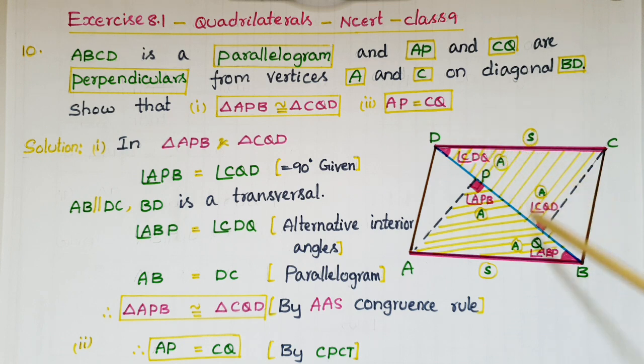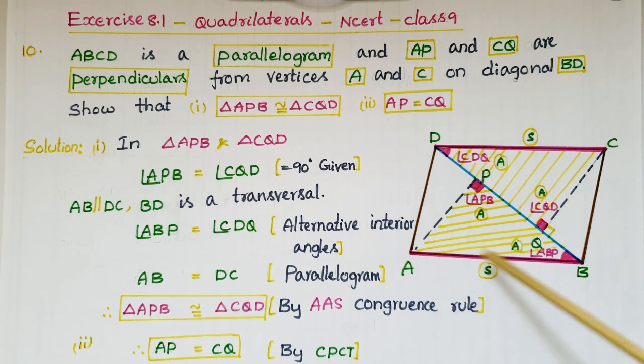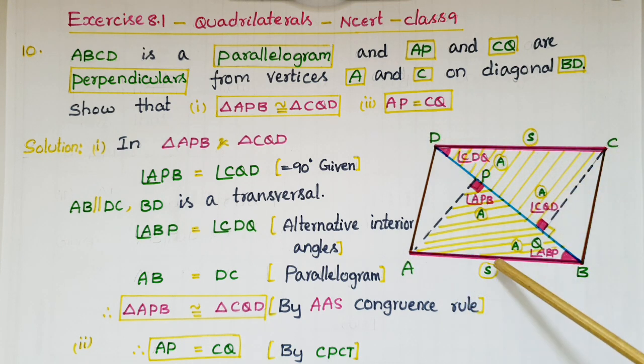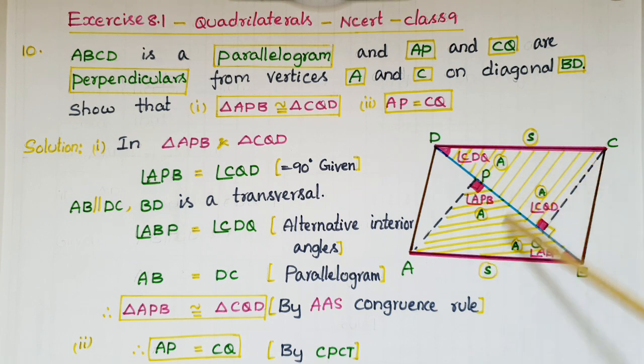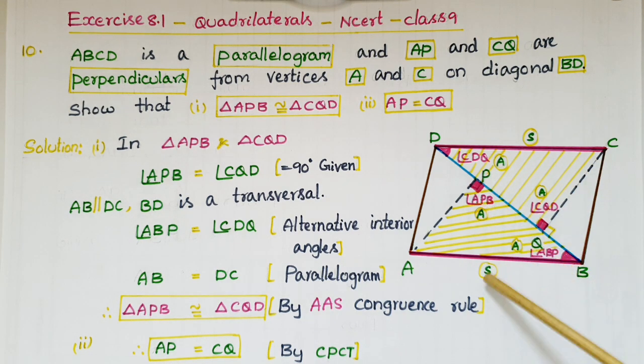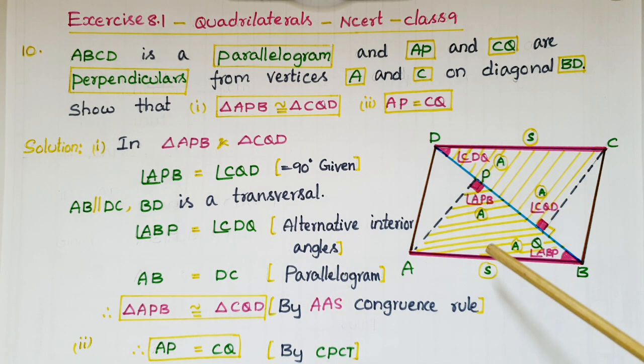Because this is a parallelogram, these two alternate interior angles are equal. And again AB is equal to DC because in a parallelogram opposite sides are equal. So we can use the AAS congruence rule here.